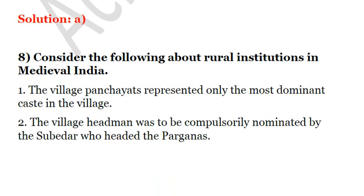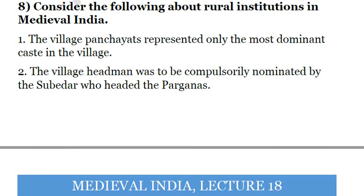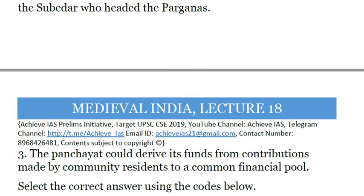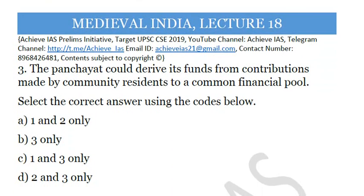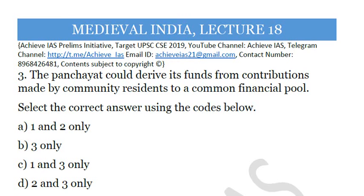The next question: consider the following about rural institutions in medieval India. First, the village panchayats represented only the most dominant caste in the village. Second, the village headman was compulsorily nominated by the subedar who headed the parganas. Third, the panchayat could derive its funds from contributions made by community residents to a common financial pool. Only the third statement is correct — panchayats derived their resources from contributions by different community residents to a common financial pool. The answer is B: third only.